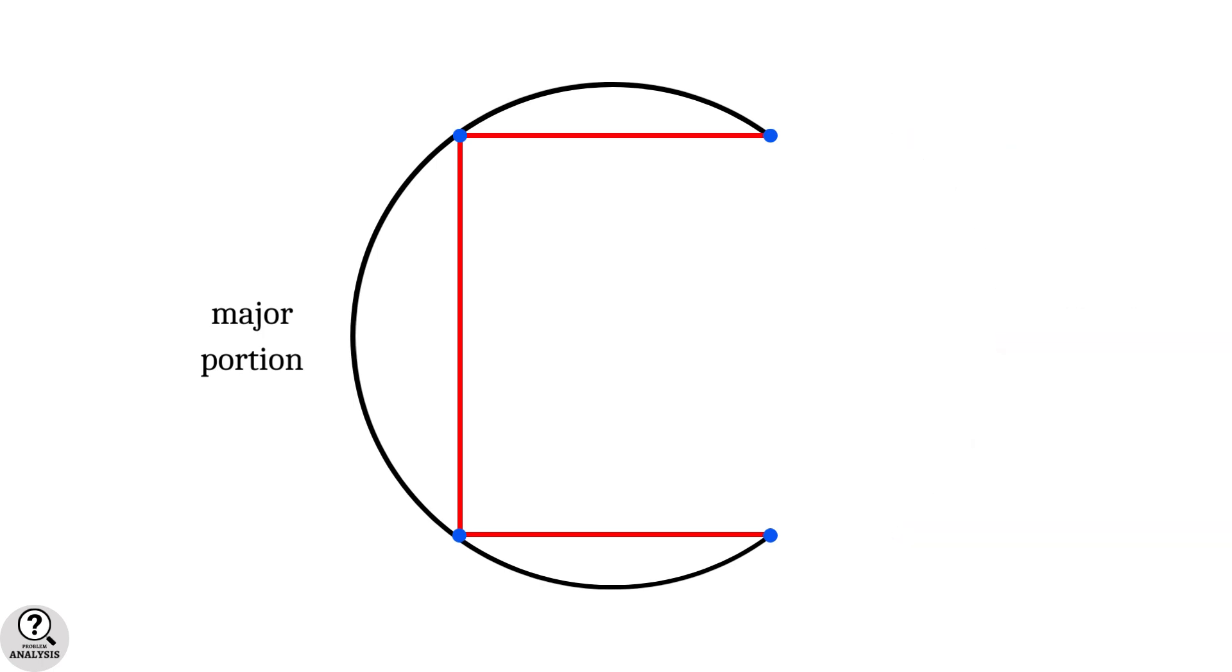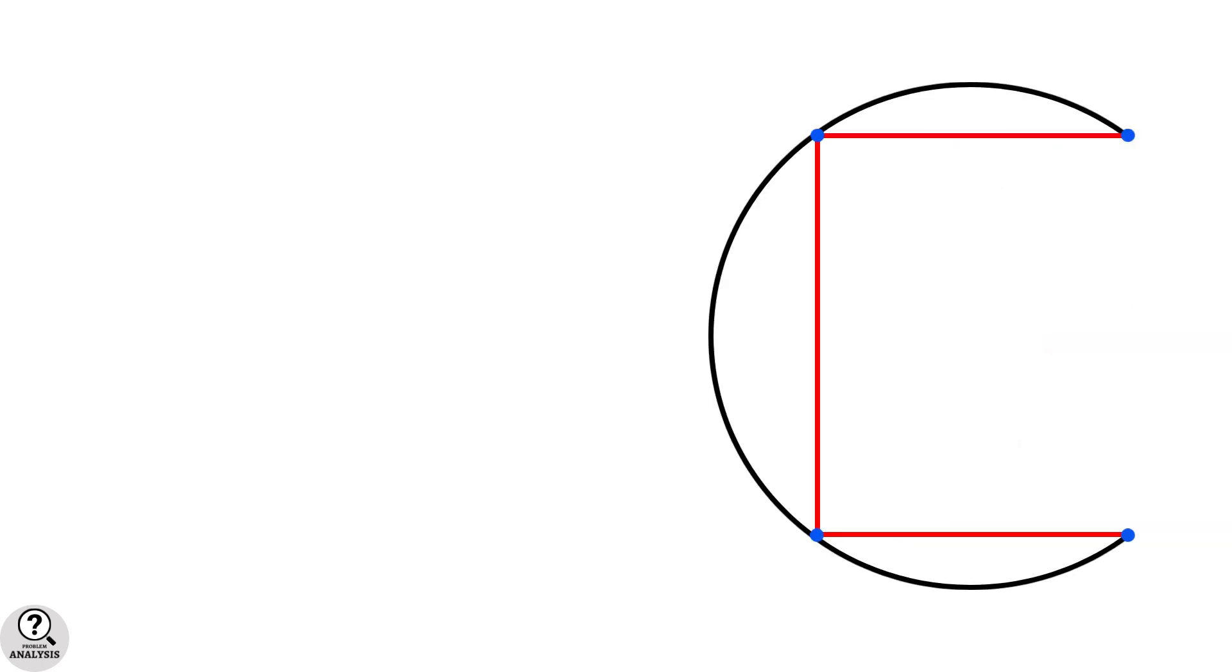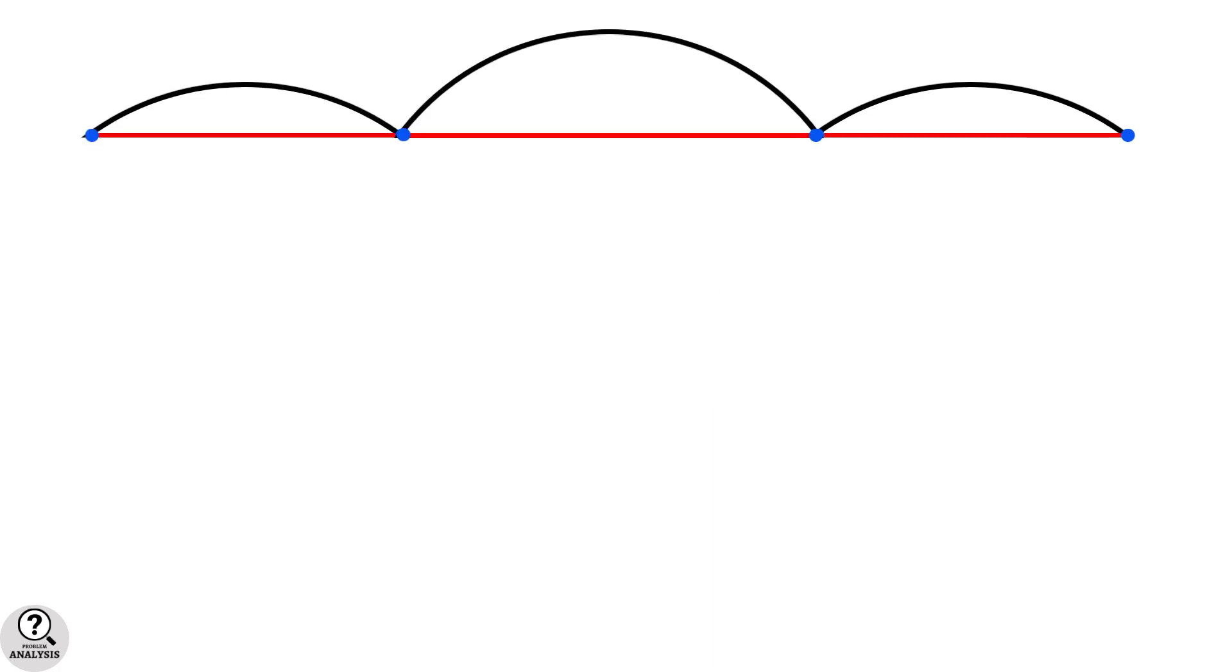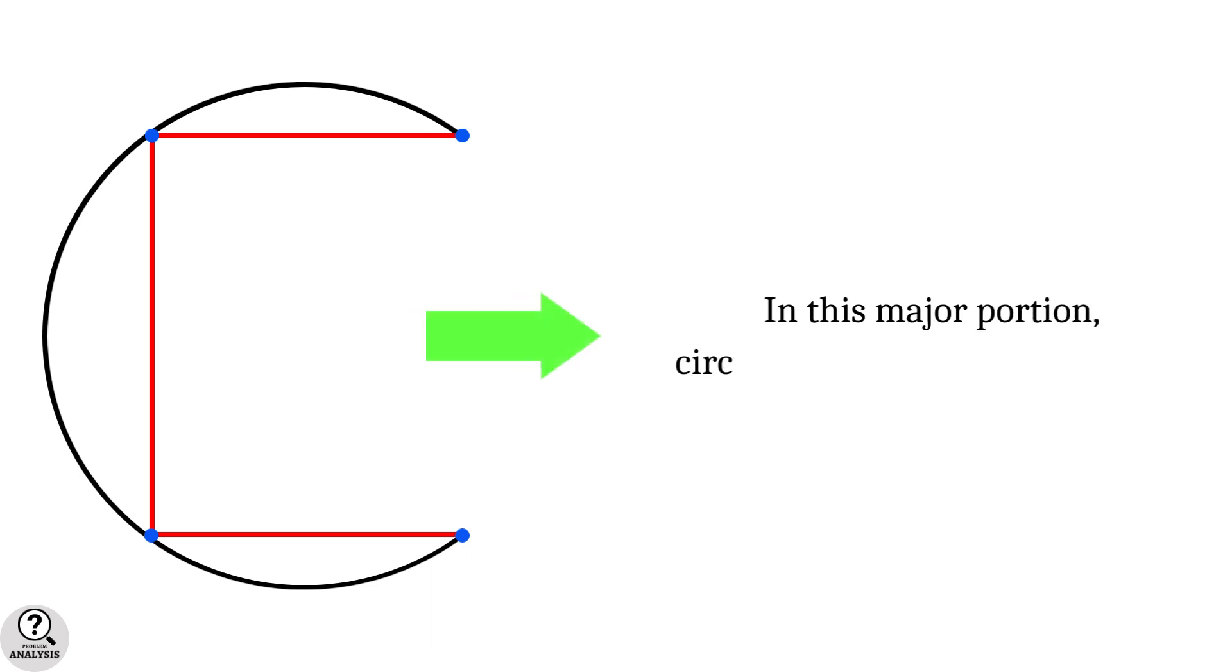Now what I am going to do is just rearrange the figure like this. Then it is clear that the black colored arc pieces have more length than the red colored line segments.